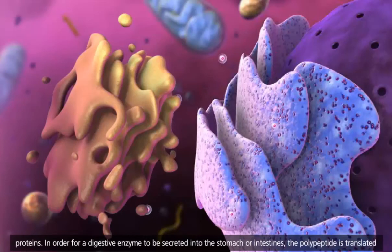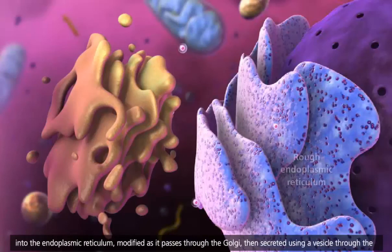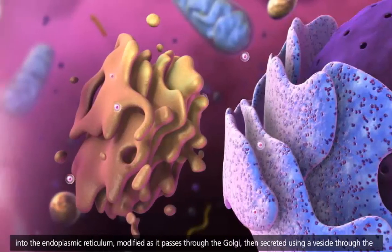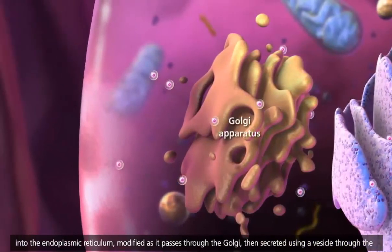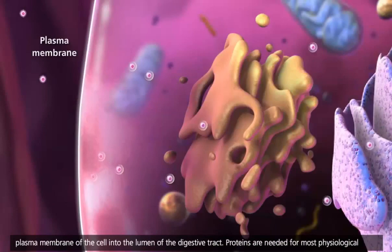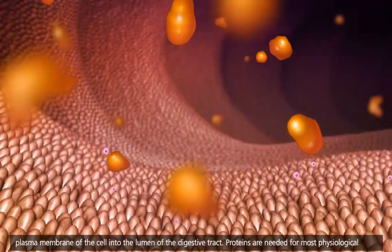In order for a digestive enzyme to be secreted into the stomach or intestines, the polypeptide is translated into the endoplasmic reticulum, modified as it passes through the Golgi, then secreted using a vesicle through the plasma membrane of the cell into the lumen of the digestive tract.